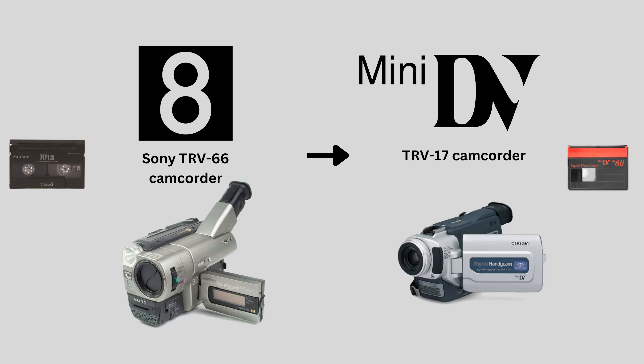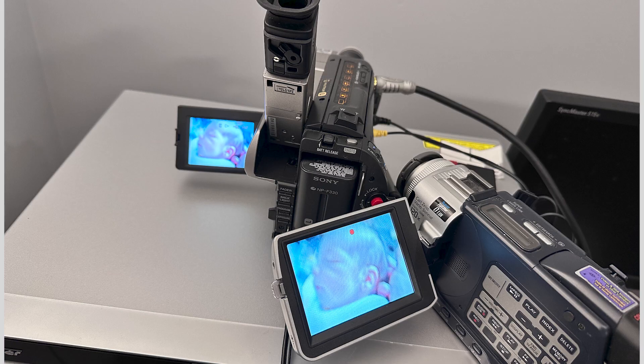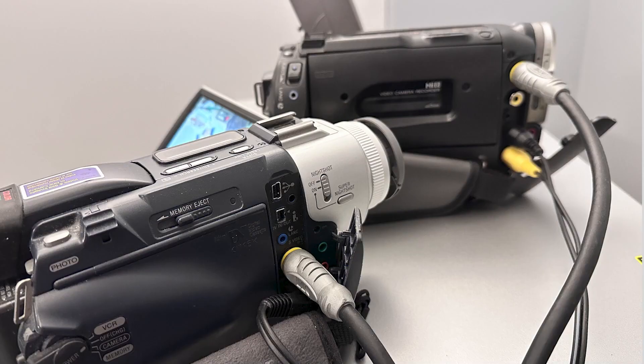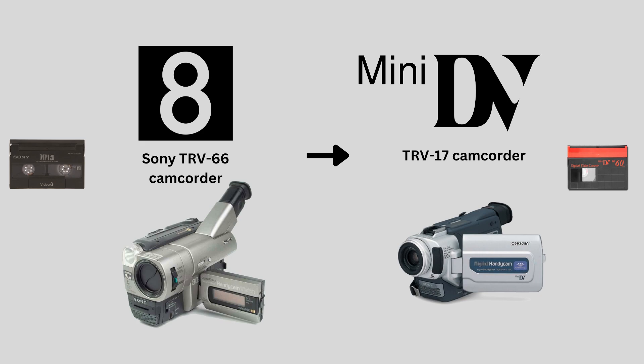For the second method, we connected a Sony Hi8 camcorder to a Sony MiniDV camcorder. We made a digital copy on the MiniDV tape, and then we connected the MiniDV camcorder to a computer using a FireWire connection. We played the tape back and captured it with the WinDV software on our Windows 10 computer.